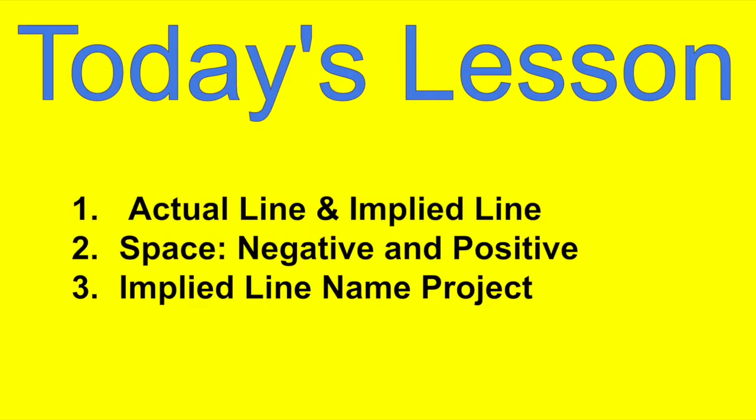In today's lesson, we're going to continue with elements of art and continue looking at line. We're also going to look at the element of art called space — actual line and implied line are the two lines we're going to focus on today. Space is negative and positive space. At the end of this video, I'll give you instructions for how to make an implied line name project.